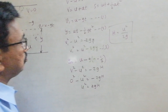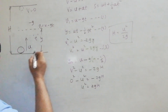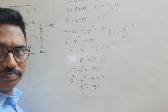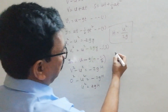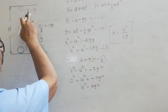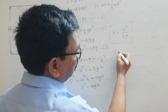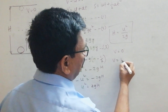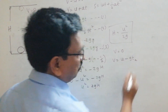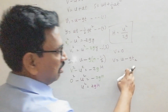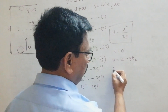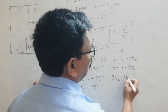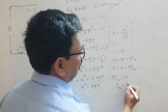The time of ascent is the time taken by the vertically projected body to reach the maximum height position. At the maximum height, final velocity V equals zero and initial velocity is U. Using V equal to U minus G times T_A, with V equal to zero: zero equals U minus G times T_A, so G times T_A equals U, giving time of ascent T_A equal to U divided by G.